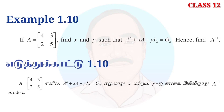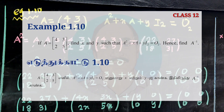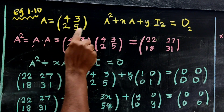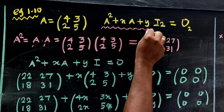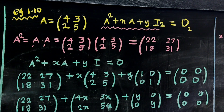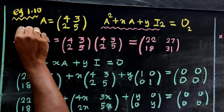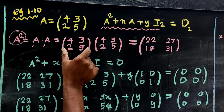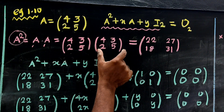So, if A is equal to x and yI, then the inverse is equal to yI₂. That means A is equal to [[4, 3], [2, 5]] and A squared plus xA plus yI₂ equals zero. If A equals yI₂ equals A, then the inverse is equal to A.